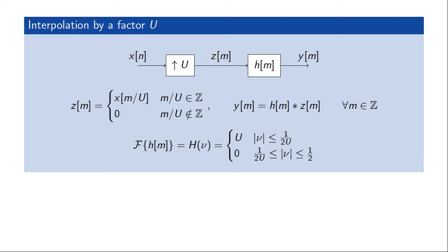We could also implement an upsampling and interpolating circuit using a polyphase filter implementation. In an interpolating circuit we have the upsampler U and the interpolating filter H of m. For proper interpolation, this filter corresponds to an ideal low-pass filter with a cut-off frequency of 1 over 2U, where U is the upsampling factor, and includes a gain of U to compensate for the power loss from inserting zeros. Implementing this directly — first upsampling, then filtering — would be inefficient, because the signal would have many zeros introduced by the upsampler, and multiplying filter coefficients with zeros wastes computations.